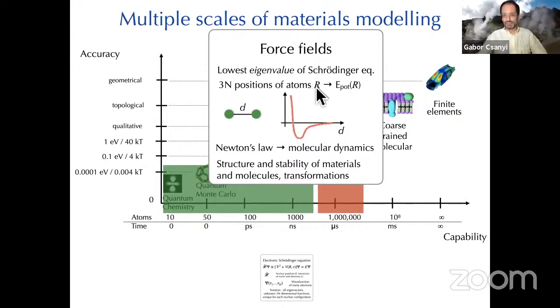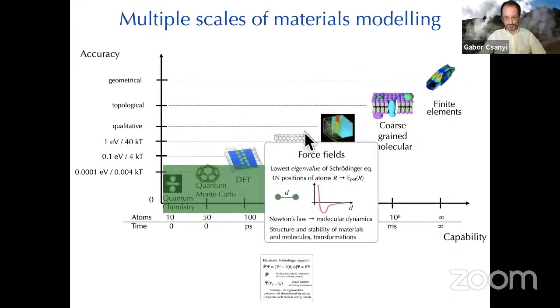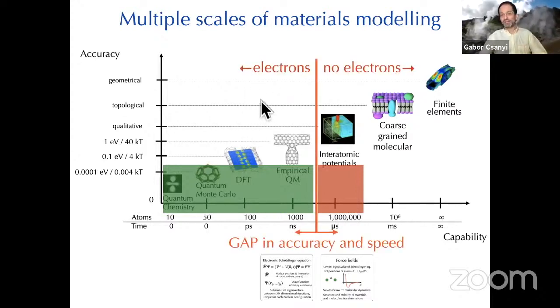At some point you cross over into the world of interatomic potentials, otherwise known as force fields. It's when we want to consider just the lowest eigenvalue of the Schrödinger equation. Forget the eigenfunctions. All I care about is the eigenvalue and only the smallest one. That becomes a function, a scalar function, of just the three n positions of the nuclei.